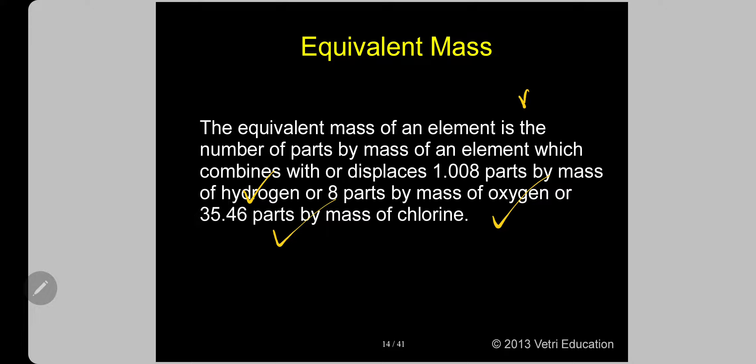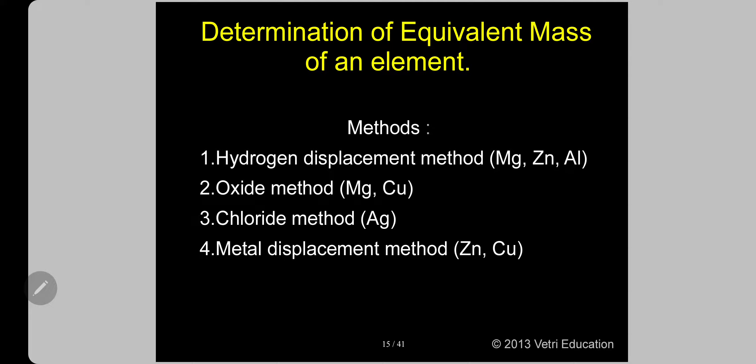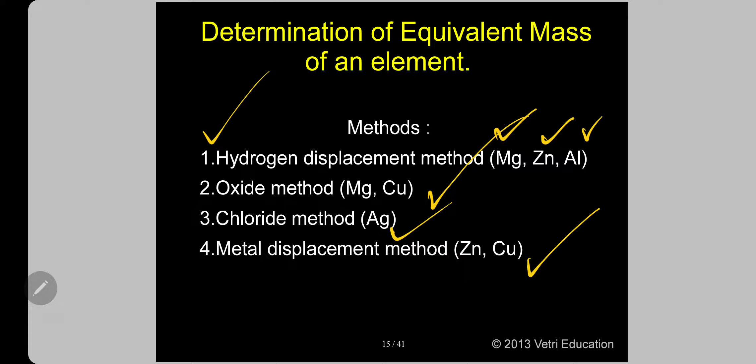What are the methods available for determination of equivalent mass? There are four methods commonly used. Number one: hydrogen displacement method — metals like magnesium, zinc, and aluminium are used to displace hydrogen. Number two: oxide method — magnesium and copper are commonly used by reacting with oxygen. Number three: chloride method — silver is reacted with chlorine to form silver chloride. Number four: metal displacement method — zinc and copper are used.